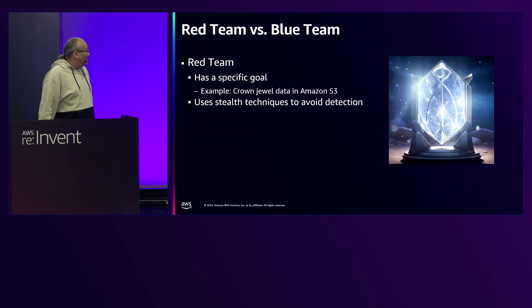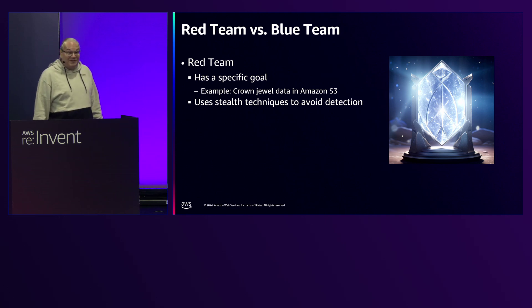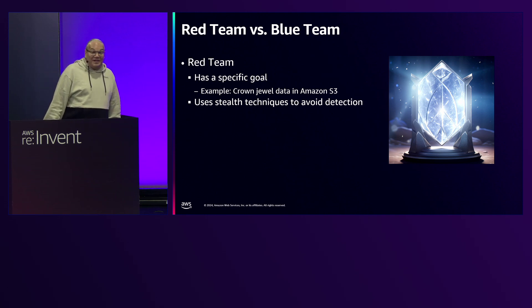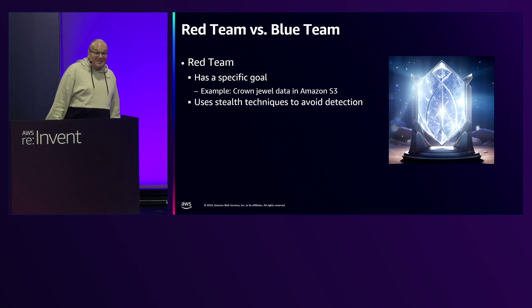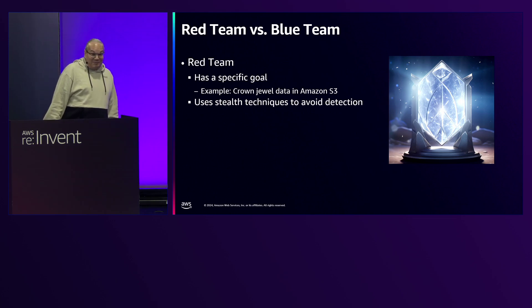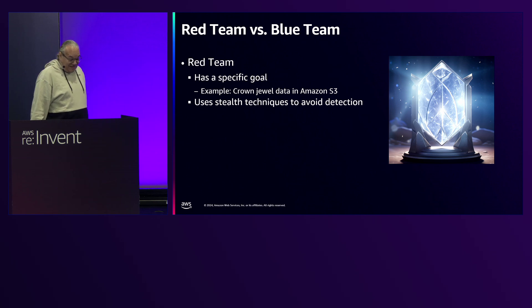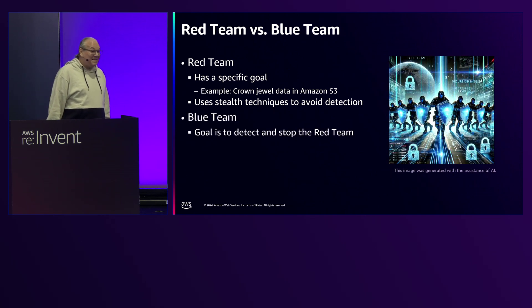The difference between the red team and the blue team is: the red team has a specific goal — for example, to get crown jewel data from S3 using stealth techniques to avoid detection. The blue team is the opposite; their goal is to detect and stop the red team.